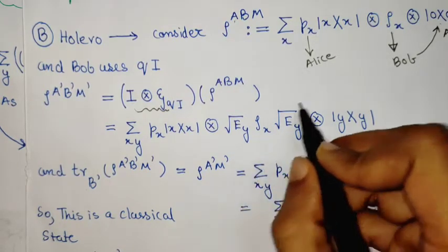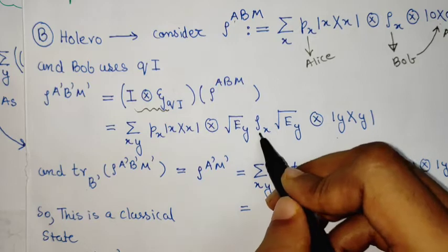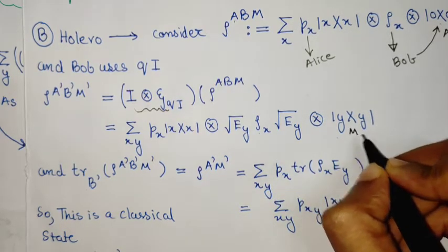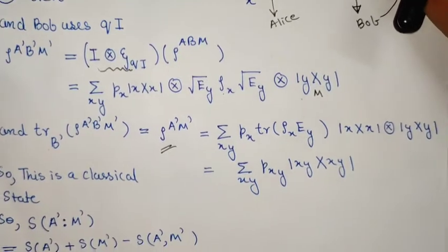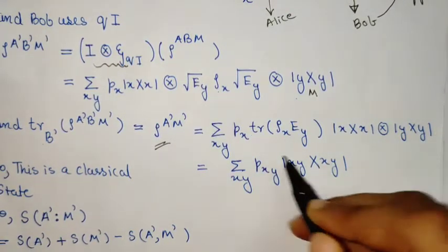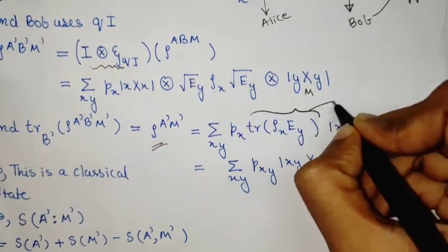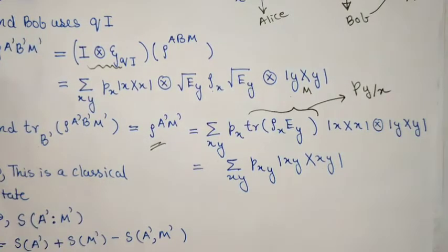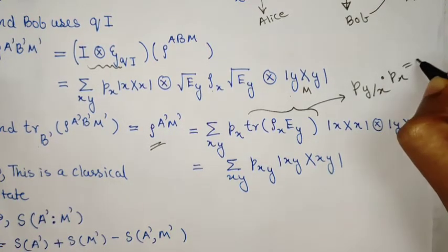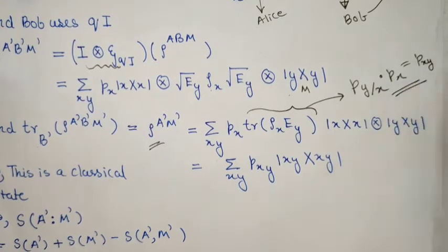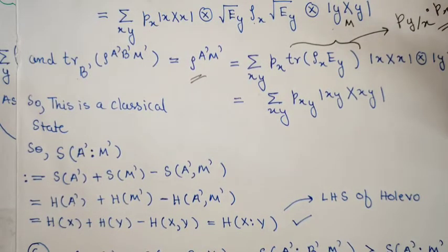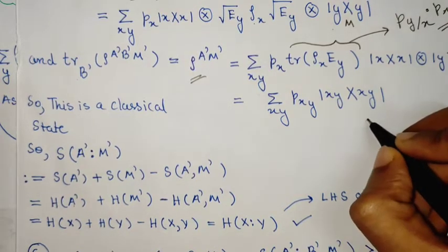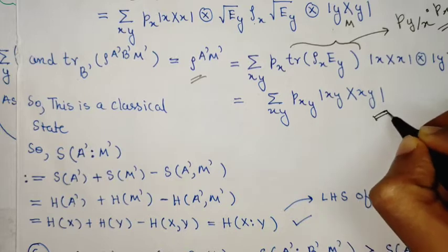Bob then discards his system rho_x and keeps the register or apparatus M to get this particular state. This particular quantity appearing here is the probability of getting y given x, and multiplied by p(x) it is simply p(x,y). After Bob's measurement, the final state of Alice and the apparatus collapses into this classical form.